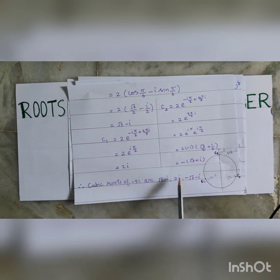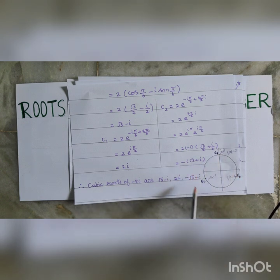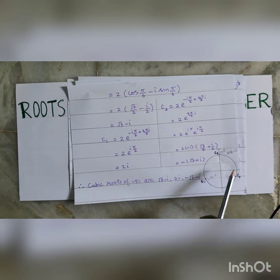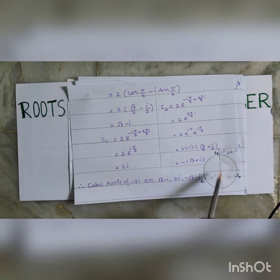C1 is 2i, which is the point 0 comma 2, and C2 is minus root 3 minus i. They divide the circle of modulus equal to 2 into 3 equal portions.